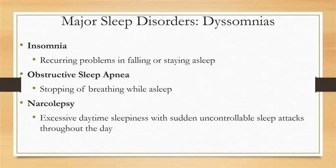Sleep apnea disrupts the quality and quantity of a person's sleep, causing daytime grogginess, poor concentration, memory and learning problems, and irritability. Although sleep apnea can occur at any age, including small children, it becomes more common as people age and is also more common in men than women. Sleep apnea can often be treated with lifestyle changes, such as avoiding alcohol or losing weight. Moderate to severe cases are usually treated with continuous positive airway pressure, or CPAP — a device that increases air pressure in the throat so that the airway remains open.